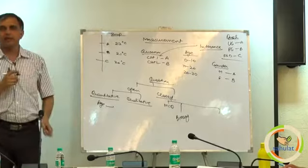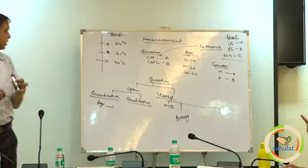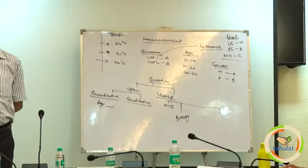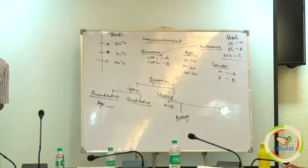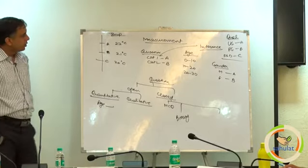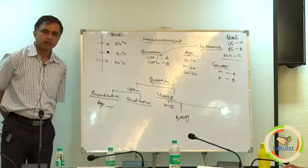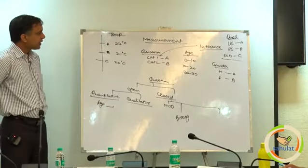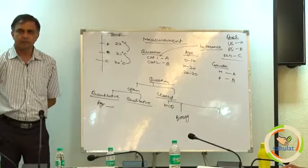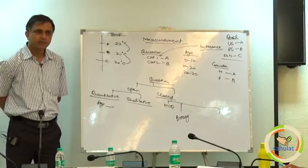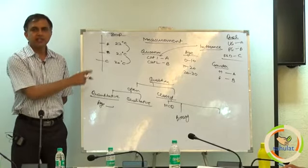On the same day and at the same time temperature was noted in the three cities, it comes out like this. Now, check out my inferences. Temperature of A is more than that of B and C. Temperature of B is more than C. Whatever the difference between A and B is there, the same is the difference between B and C. Does it make sense? Yes. If it makes sense, it is interval measurement.